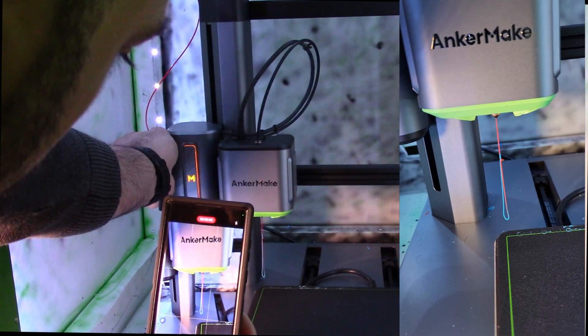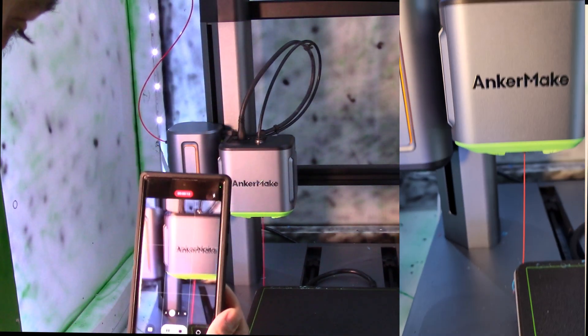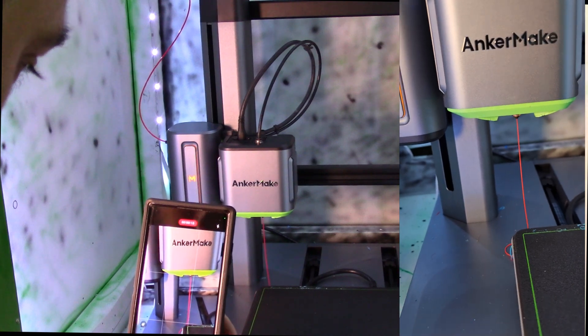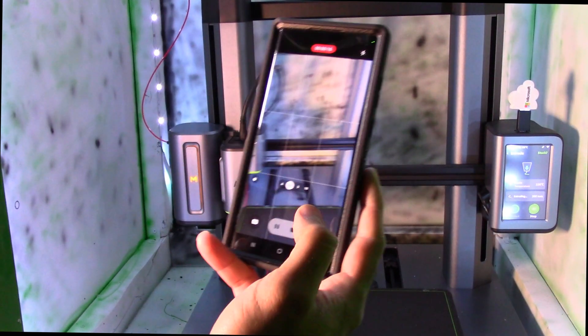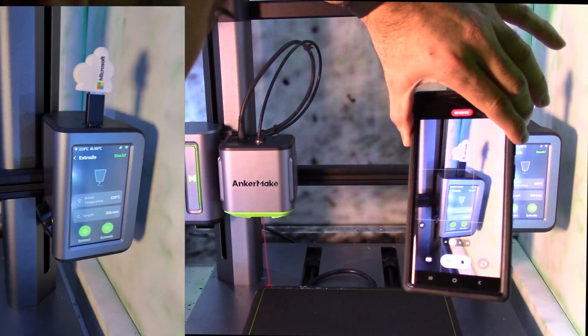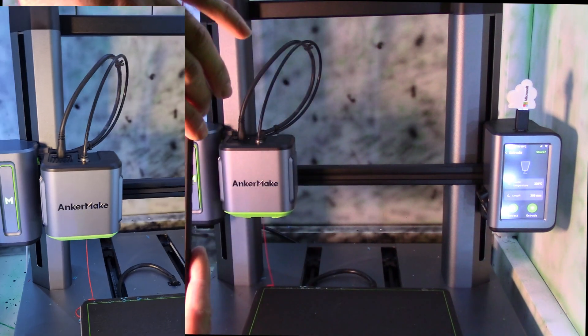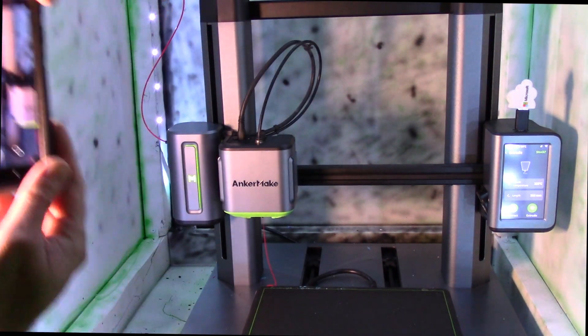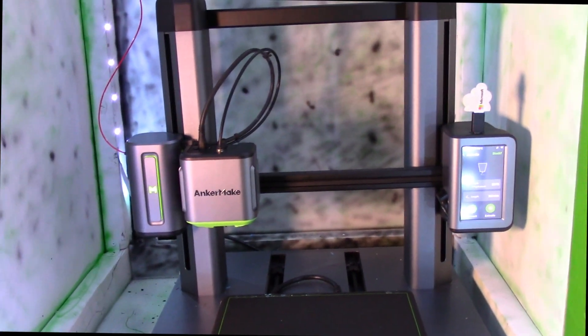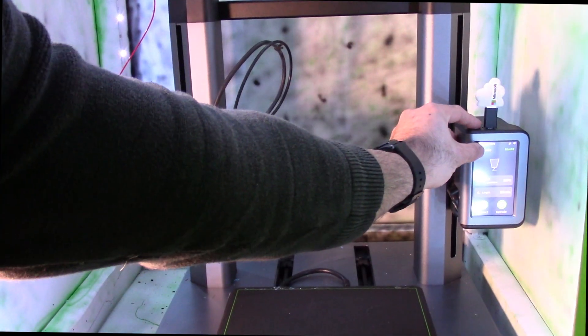As I'm extruding, I want to push the filament slowly, and then you can see it's starting to change color right off the bat. So now it's fed through completely. I don't need to push anymore, and now it's going to the red. So now I can go ahead and hit stop here, and now I'm ready for a print.